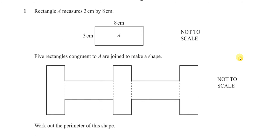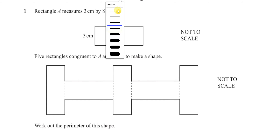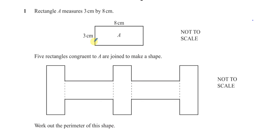We need to work out the perimeter of this shape — the length of the outline. A common mistake students might make is to find the perimeter of one rectangle and multiply it by 5. The problem with that is some parts are internal and not part of the outline. We could find the perimeter of 5 rectangles and subtract those internal lines, but we need to be careful to account for contributions from multiple rectangles.